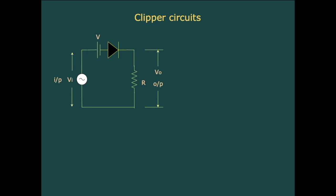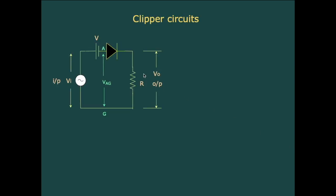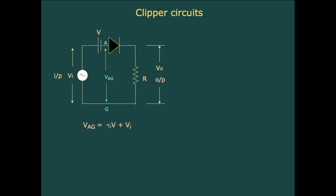Let us see a modification to this basic series clipper circuit where a DC power supply is connected in series with the diode. To decide whether the diode is forward or reverse biased we look at the voltage at its anode, point A, with respect to point G, that is VAG. We can write VAG as minus V plus Vi, since going from A to G through the DC supply we go from the negative terminal to the positive terminal, contributing minus V, then through the input voltage Vi.